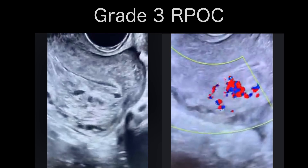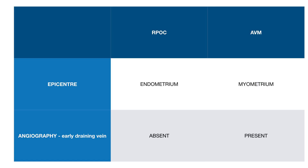To differentiate Grade 3 RPOC from its potential differential AVM: the most important feature is location. RPOC will have its epicenter in the endometrium, while AVM will have its epicenter in the myometrium. On angiography, you can see an early draining vein in AVMs, which will be absent in RPOC.